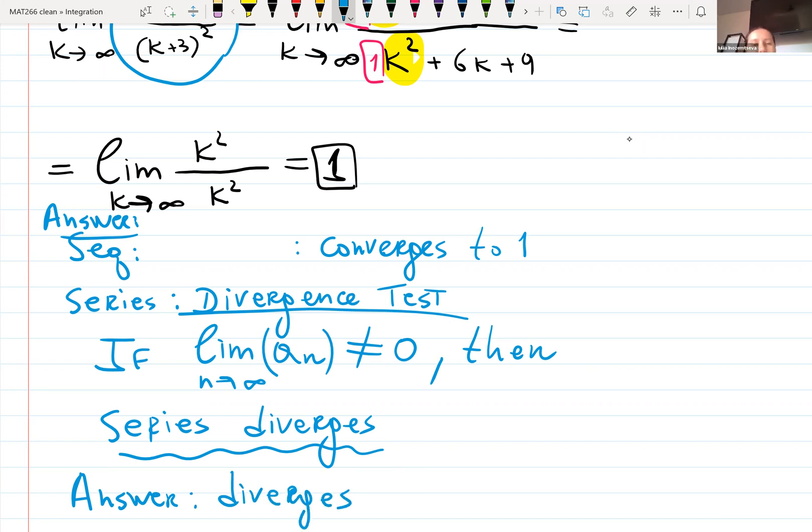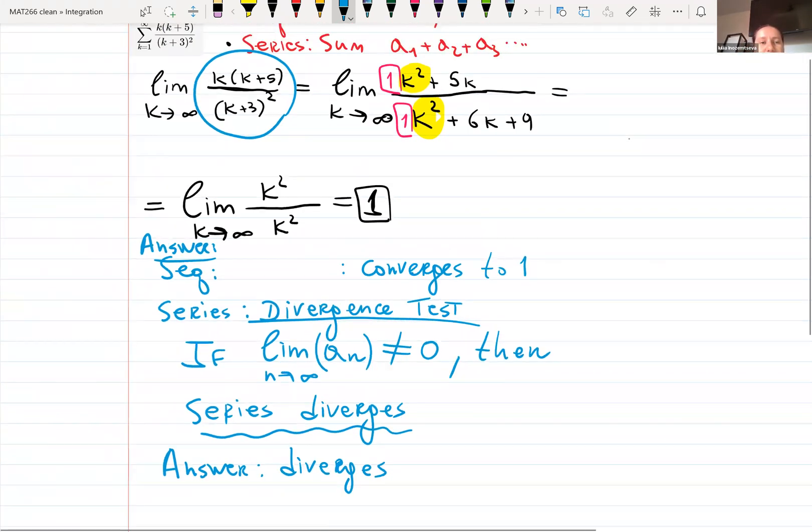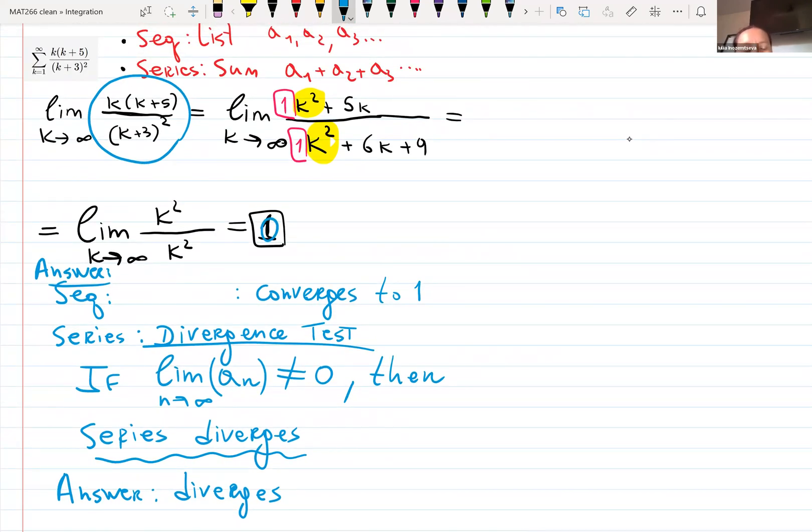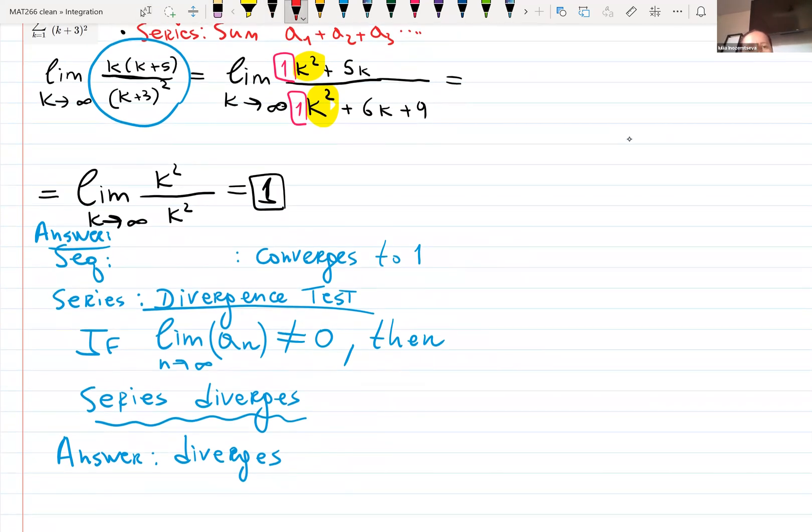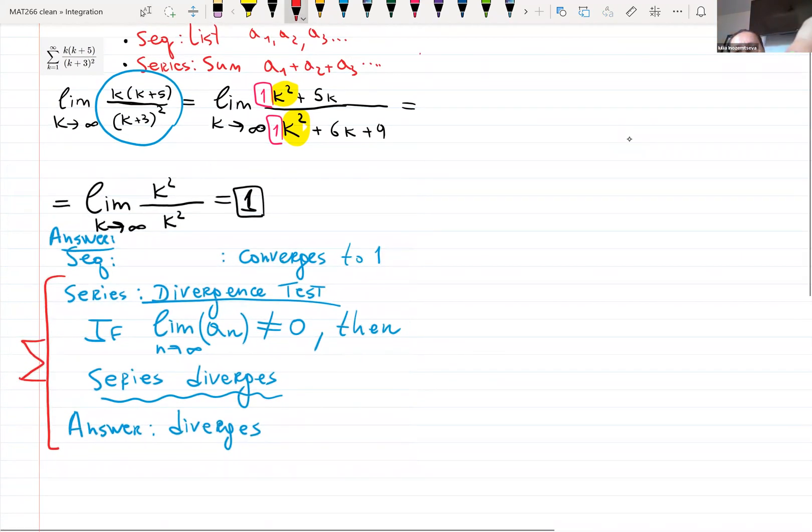However, divergence theorem does not show if it converges. So if it was zero, then it's not enough information to claim that the series converges. Then we're going to teach you more tests in the next chapter, the ratio test and everything, stuff like that. So that's important. For series, it's more complicated. When we have a sum, when we're working with the sum, it is not as simple. Visually, I can show you what it means.